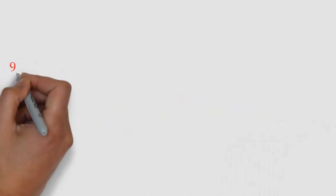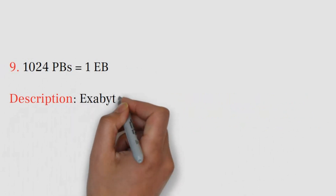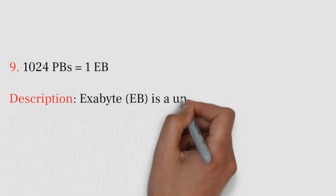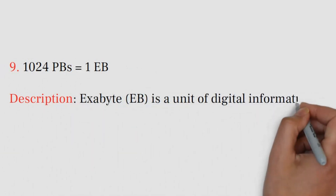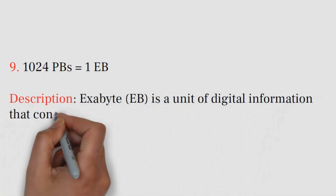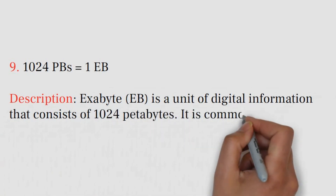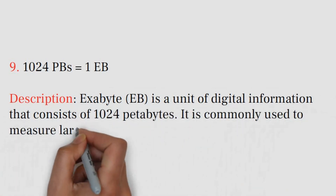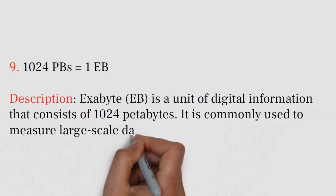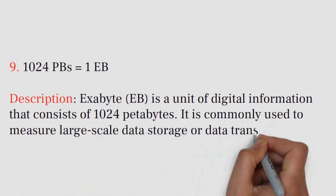Number 9: 1024 PBs equals 1 EB. Exabyte (EB) is a unit of digital information that consists of 1024 petabytes. It is commonly used to measure large-scale data storage or data transfer volumes.